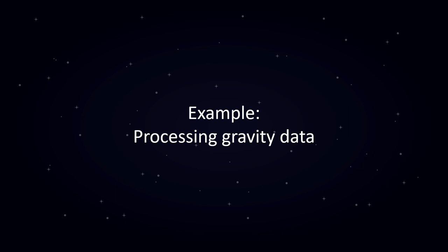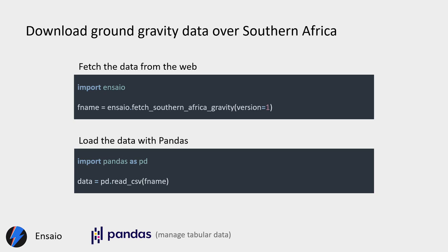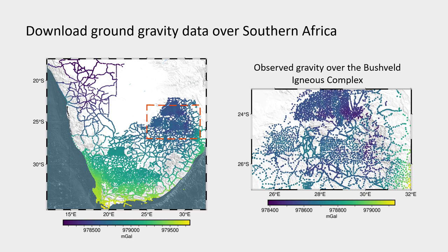The first example I want to show you is how we can process some gravity data. Let's start by downloading some ground gravity data over Southern Africa. We have a dataset in Ensaio, so we can use the fetch_southern_africa_gravity function to download a CSV file that we can load with Pandas. Here on the left you can see the whole dataset, and for this example I'm going to focus on the Bushveld Igneous Complex, shown on the right after cropping with Pandas.